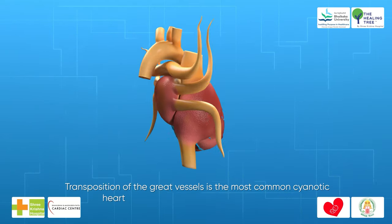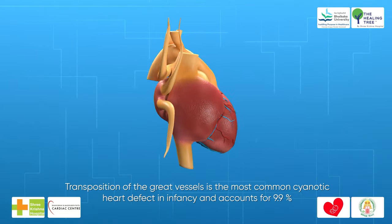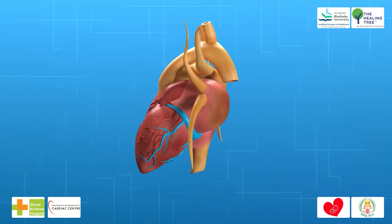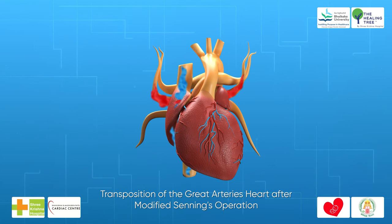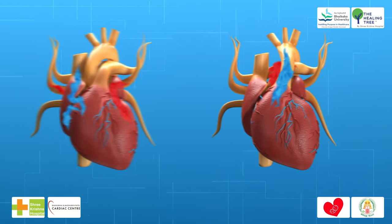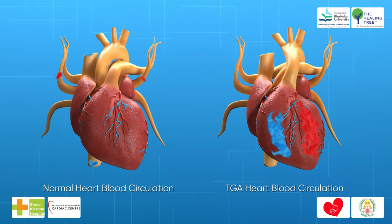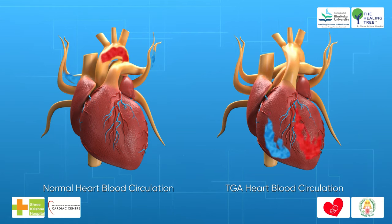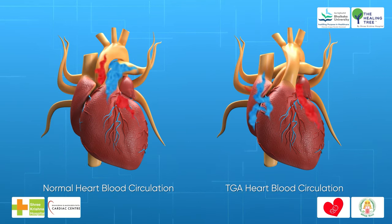Transposition of the great vessels is the most common cyanotic heart defect in infancy and accounts for 9.9% of all cases of congenital heart disease. Transposition of the great arteries is characterized by two separate parallel circulations in which the systemic venous blood passes through the right ventricle to the aorta, while the pulmonary venous blood passes through the left ventricle, resulting in cyanosis.